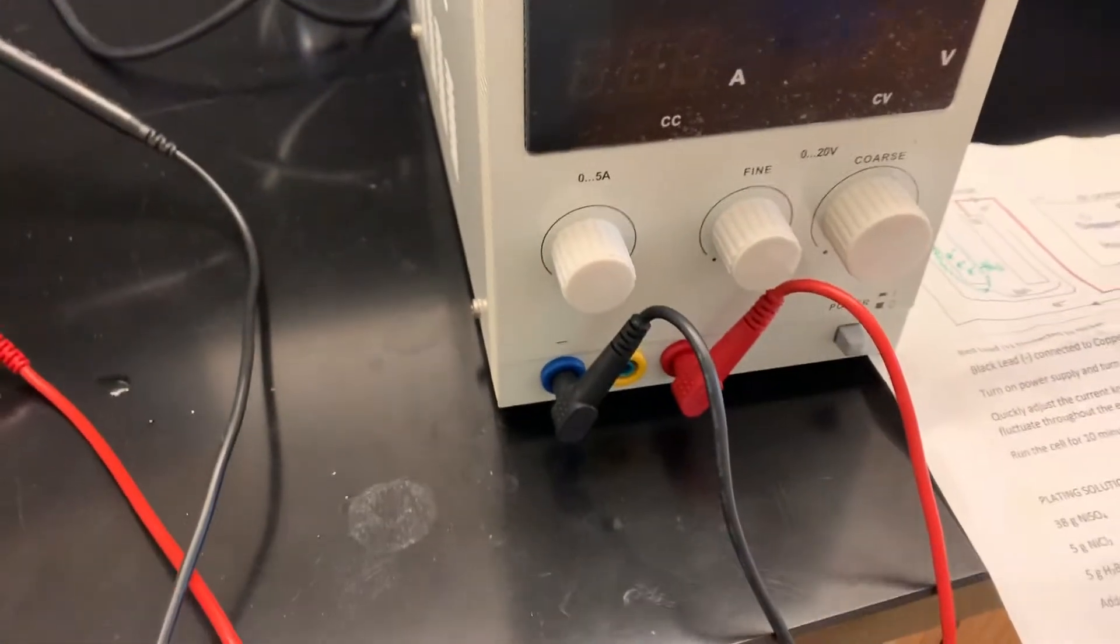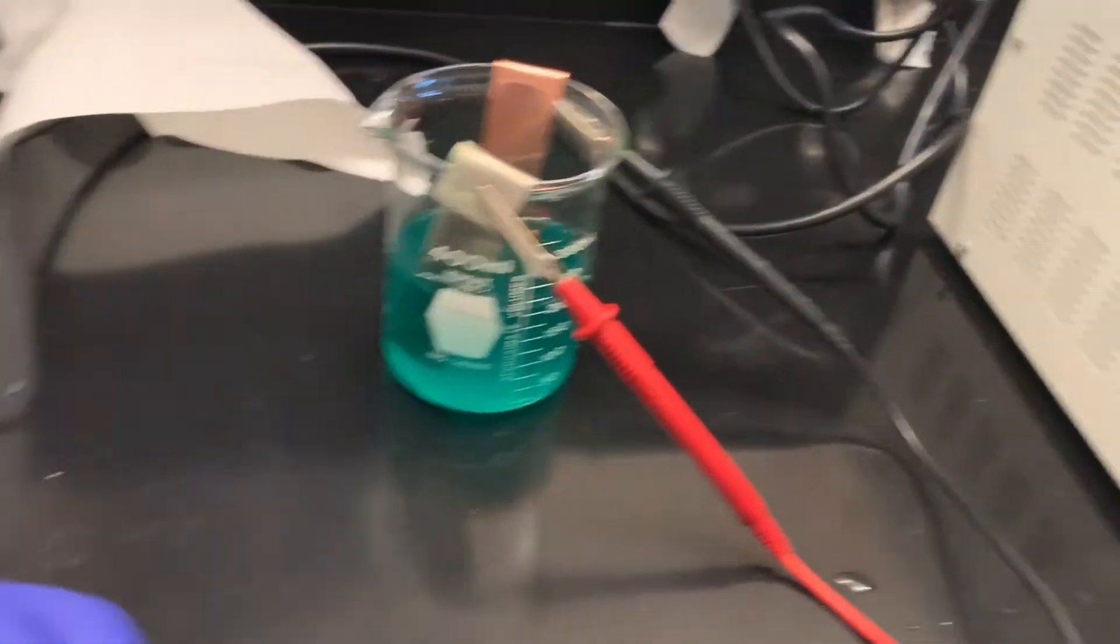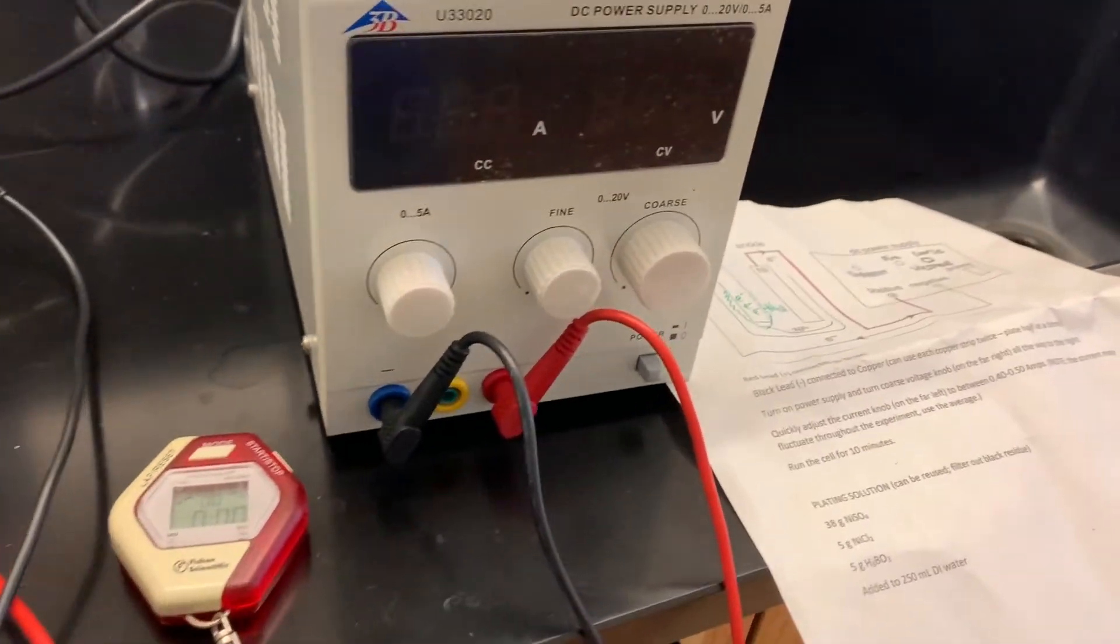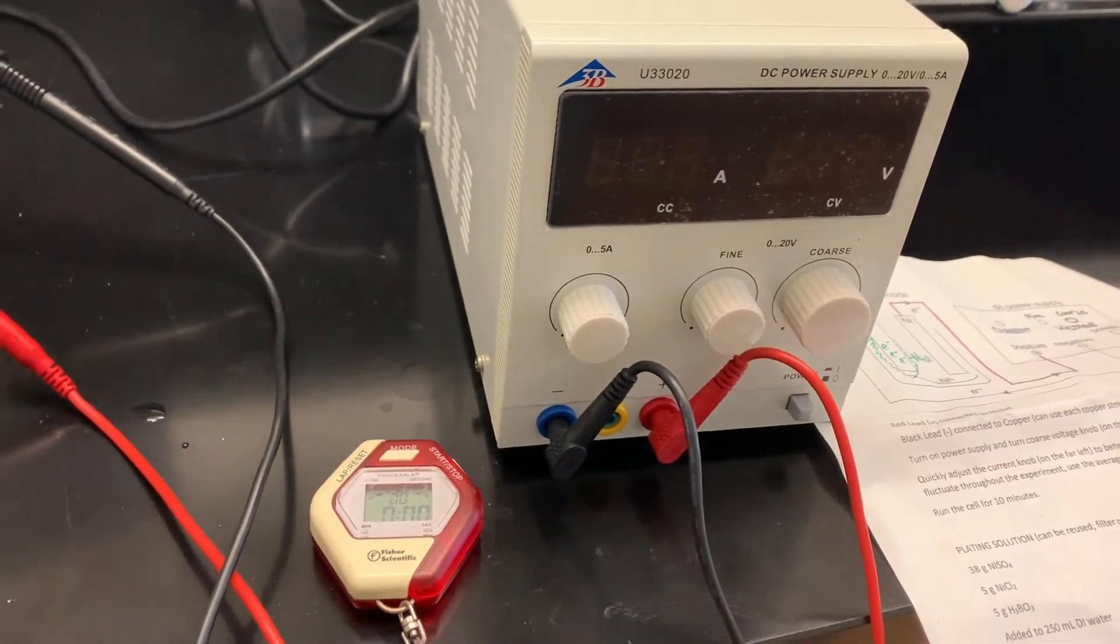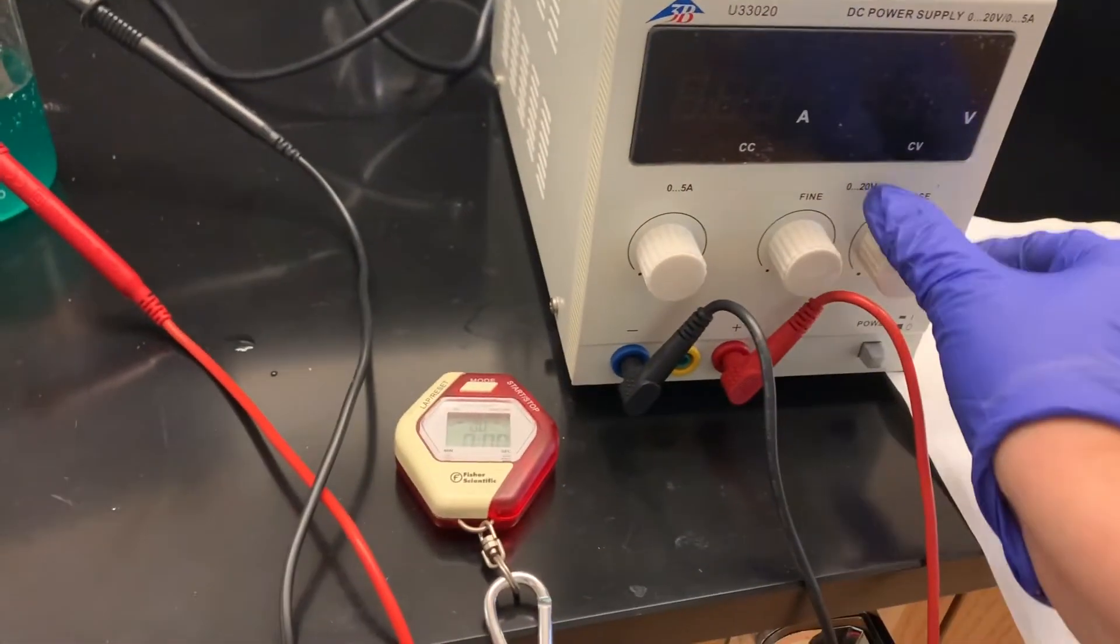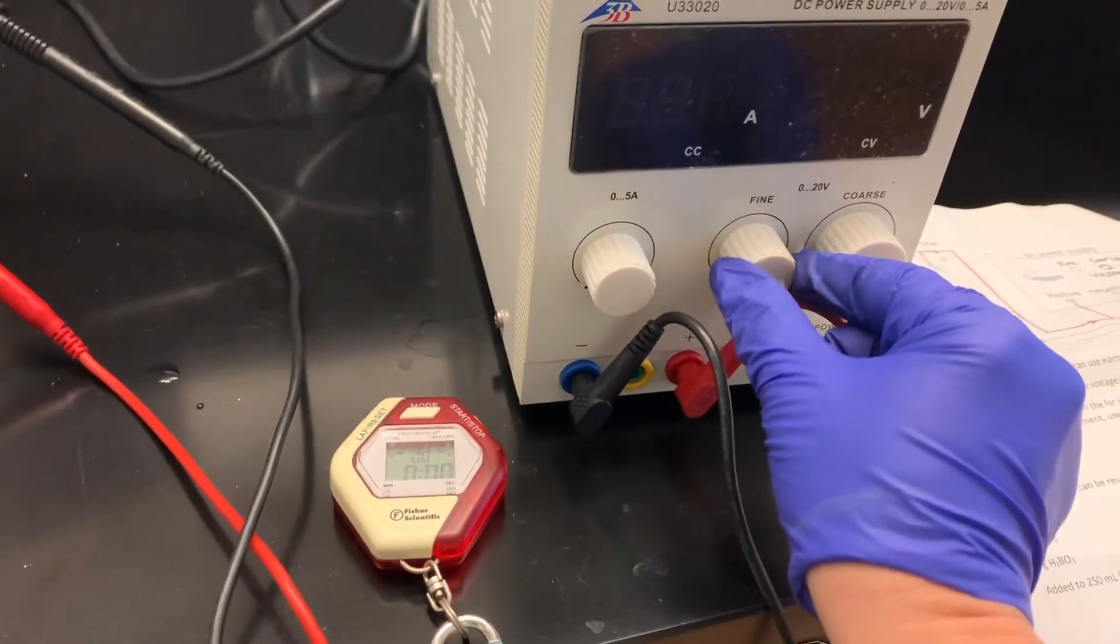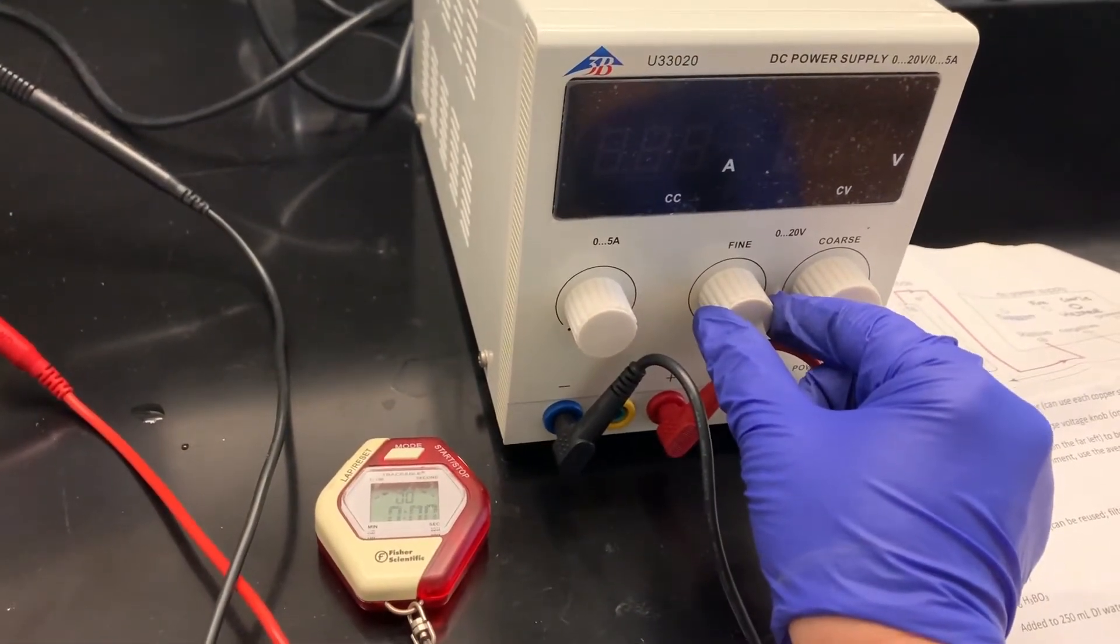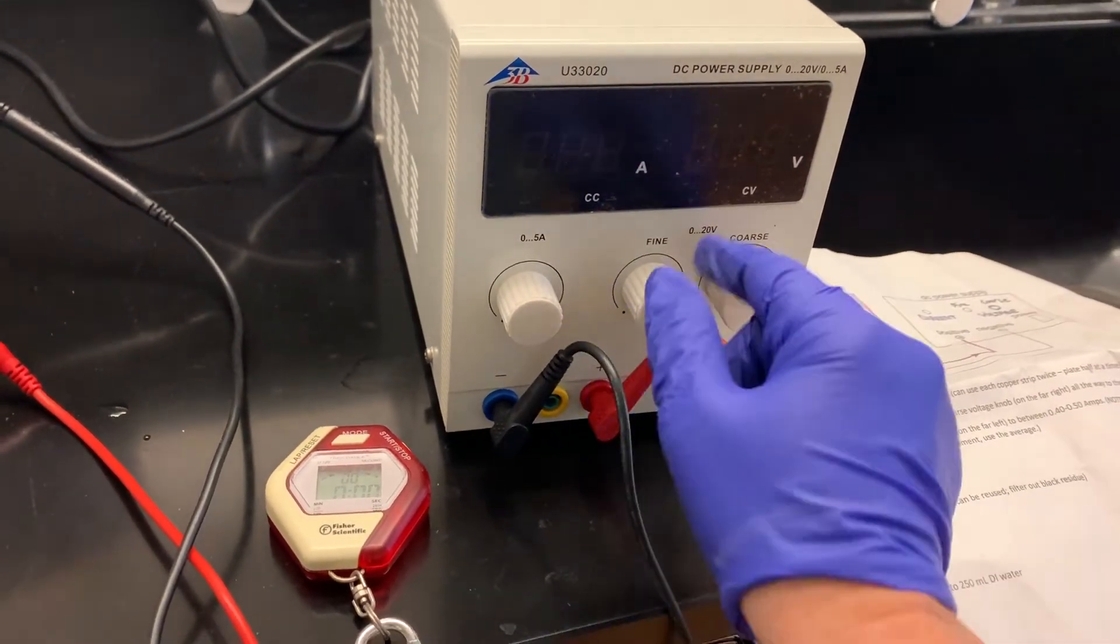I need to turn this power supply on. I also want to start the timer because I want to know how long I'm doing this for. I'm going to have my timer stopwatch ready. I'm going to turn on the power supply. There's a coarse voltage knob, we're going to turn it all the way to the right, and then we're going to quickly adjust the current knob.